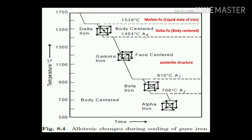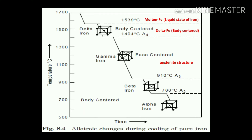Here, once again, temperature is plotted with respect to time. Above 1593 degrees centigrade — the melting point of iron — it is in 100% molten form. When cooled down to around 1404 degrees centigrade, or the A4 temperature range, the molten iron starts to convert into solid form. Initially at higher temperature it forms delta iron, which has a body-centered cubic structure (BCC). With further cooling, above 910 degrees centigrade — the A3 temperature line — it forms the solid phase of iron as gamma iron, which has a face-centered cubic structure.